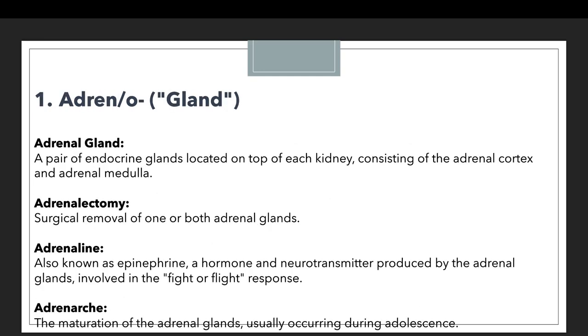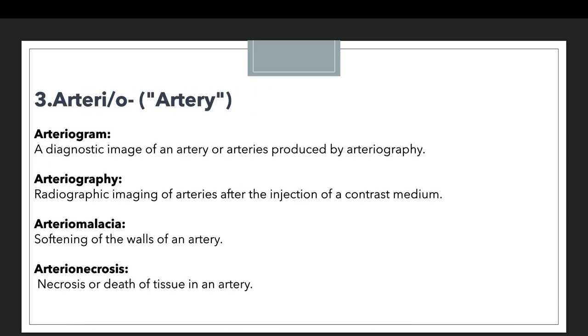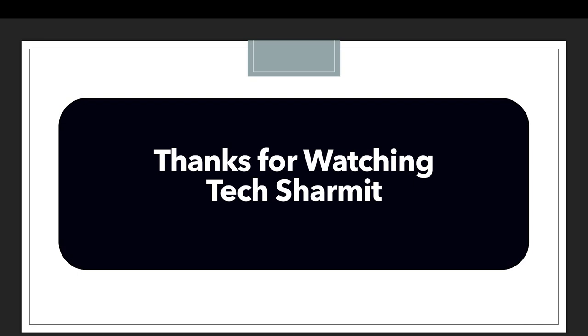So those are the prefixes for today's session: adren relating to gland, angio relating to blood vessel, and arterio relating to artery. For today's question: what information is provided by the prefix adip or adipo, or aden or adeno? You can share your knowledge in the comment section. If you don't know the answer, you can refer to the previous session where we have already discussed these topics in detail. That's all for today — in the next session we will discuss a few more things. Thank you for watching Texture Myth.